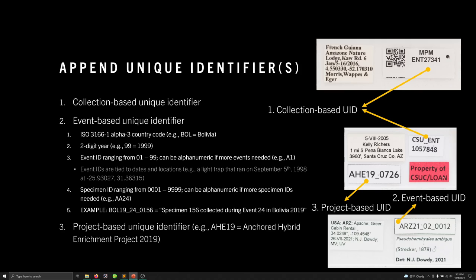Then there's a two-digit year — so 99 would be 1999. And then an event ID, which is two digits and can range from 1 to 99. You can also add an alphanumeric component to increase the combination of possibilities if you have a lot of events for a given location and year.